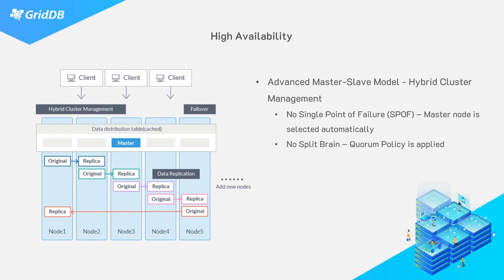In a GridDB cluster, all nodes which constitute the cluster are homogeneous, meaning they all share the same functions, similar to that of a peer-to-peer. But extending beyond that, GridDB's nodes will also pick a master node, thus making the rest of the nodes followers. If a master node should ever go down, the rest of the follower nodes will automatically elect a new master node. GridDB manages to avoid the network partitioning error known as split-brain by maintaining that the number of nodes which constitute a cluster must be more than a quorum.